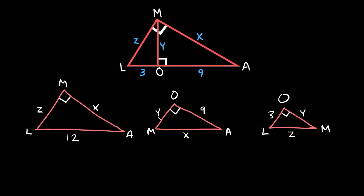Now the second step is solving for the missing lengths X, Y, and Z, and the way that we do that is by setting up proportions. Let's start with X. There are two triangles that have an X in them, so we're going to use those two to solve for X. We find corresponding sides: the hypotenuse of the big triangle is 12, which corresponds to the hypotenuse X of the medium triangle.